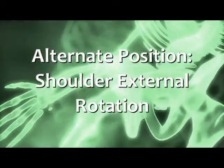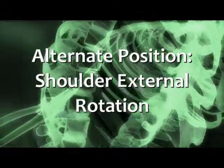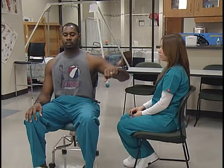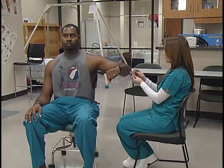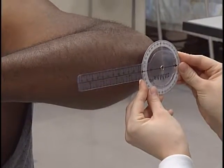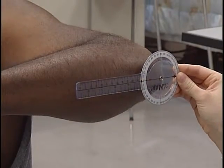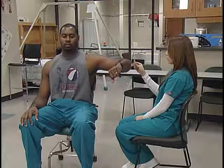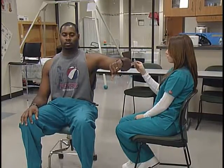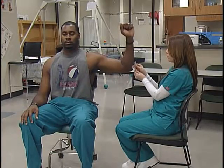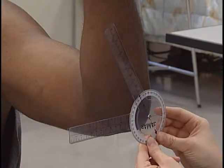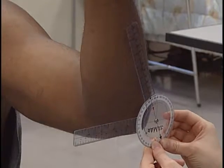For the alternate position to measure external rotation of the shoulder, the subject is seated with the humerus abducted to 90 degrees, elbow flexed to 90 degrees, and the forearm pronated. The axis of the goniometer is on the olecranon process of the elbow, and the stationary bar and movable bar are parallel to the forearm. The client's forearm is swung up gently, keeping the humerus parallel to the floor. The measurement begins at zero degrees and can range up to 90 degrees.